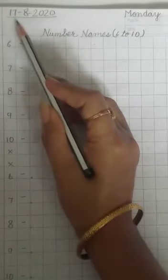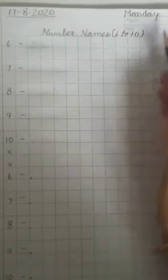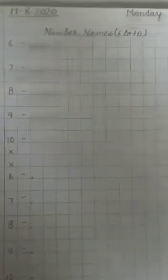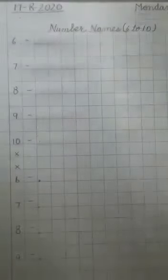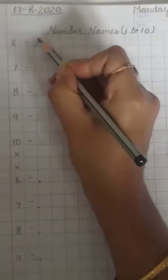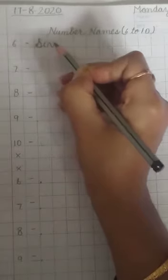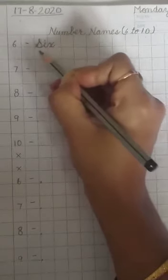On the top, today's date is 17th August 2020 and day is Monday. Now write 6 in the first box. Put a small dash in the second box, then write capital S like this, then small I, X. S-I-X, six.